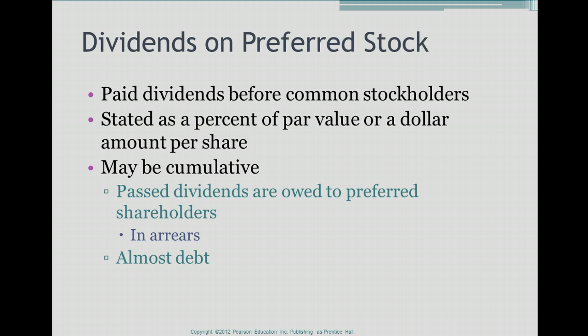Preferred stock could be cumulative or non-cumulative. What we mean by cumulative is that if the board of directors does not pay a dividend to the preferred stockholders in a particular year, those dividends get collected until the year in which they are paid.